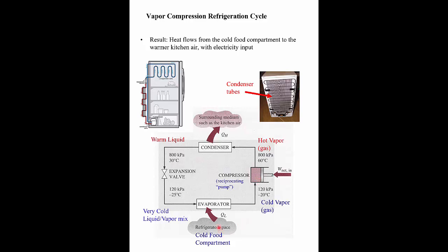The net result is you've picked up heat from the food — Q low — and you've dumped heat to the kitchen through the condenser. That's the basic function of a vapor compression refrigeration cycle. Here's a picture of an actual refrigerator: this is the compressor, the hot gases come out and go into the condenser on the back of the fridge, there's the expansion valve that cools the gas down to very cold temperatures, and it goes inside the refrigerator where it picks up heat from the food, then goes back to the compressor.